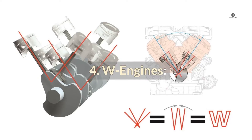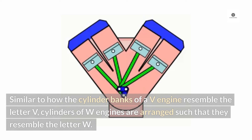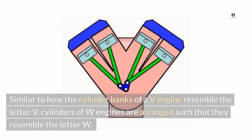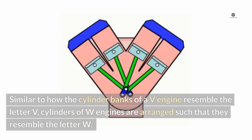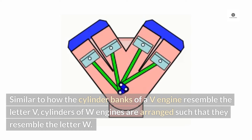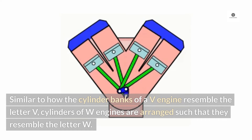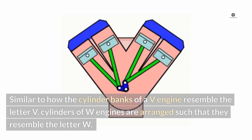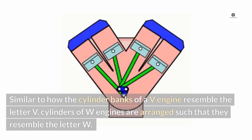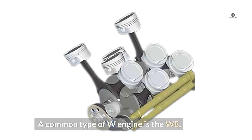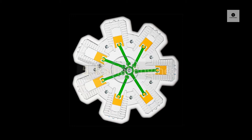W engines. Similar to how the cylinder banks of a V engine resemble the letter V, the cylinders of W engines are arranged such that they resemble the letter W. A common type of W engine is the W8.